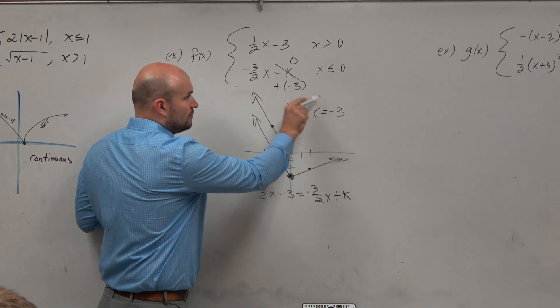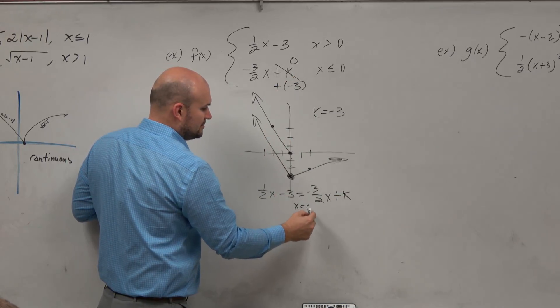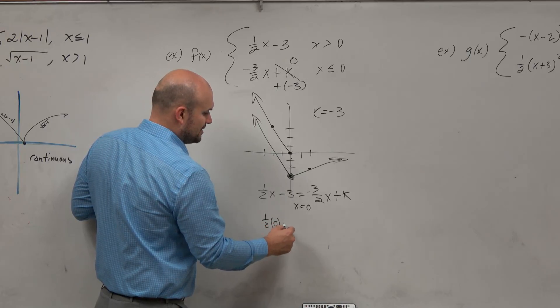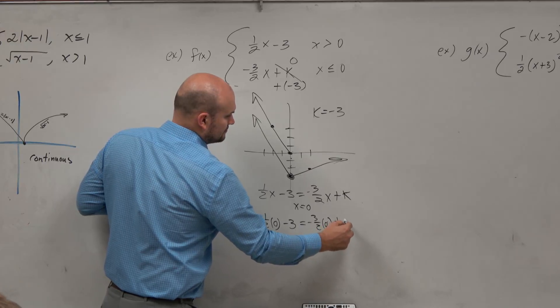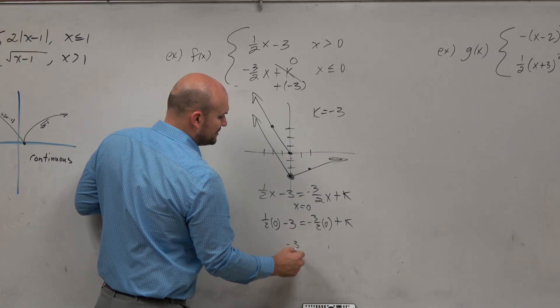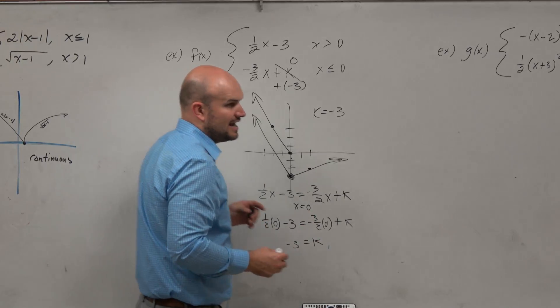And then when x is equal to 0, you're just going to replace x with 0. And when you guys simplify this, you get the algebraic answer.